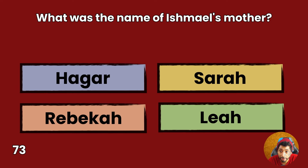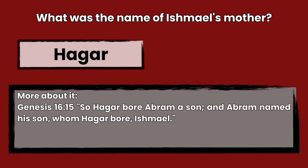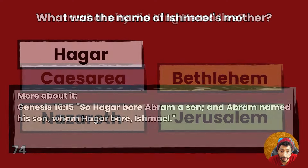Question 73: What was the name of Ishmael's mother? Hagar, Sarah, Rebekah, or Leah? Answer: Hagar. Genesis 16:15 — So Hagar bore Abram a son, and Abram named his son whom Hagar bore Ishmael.